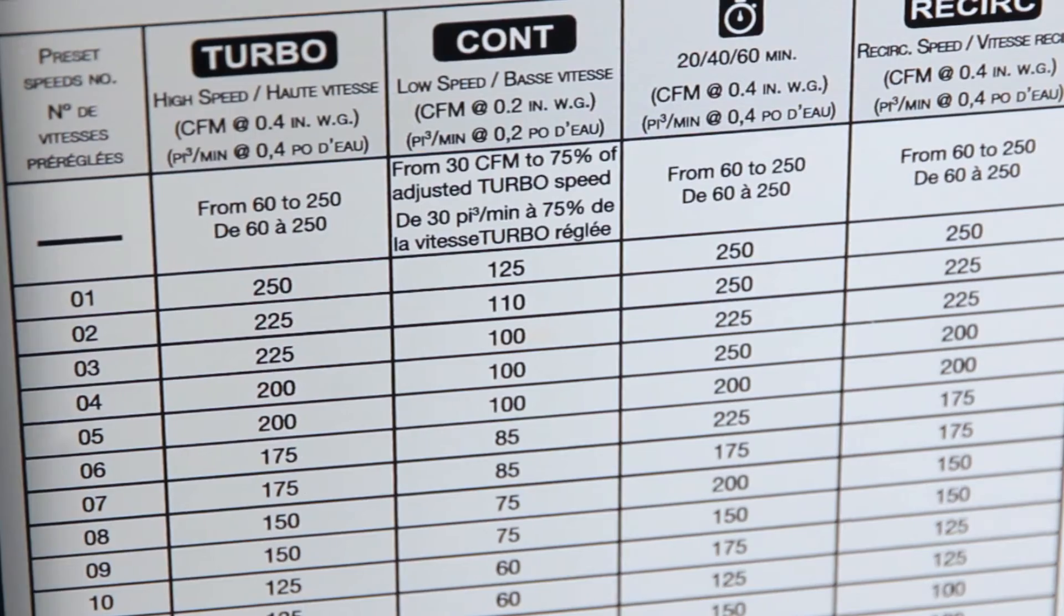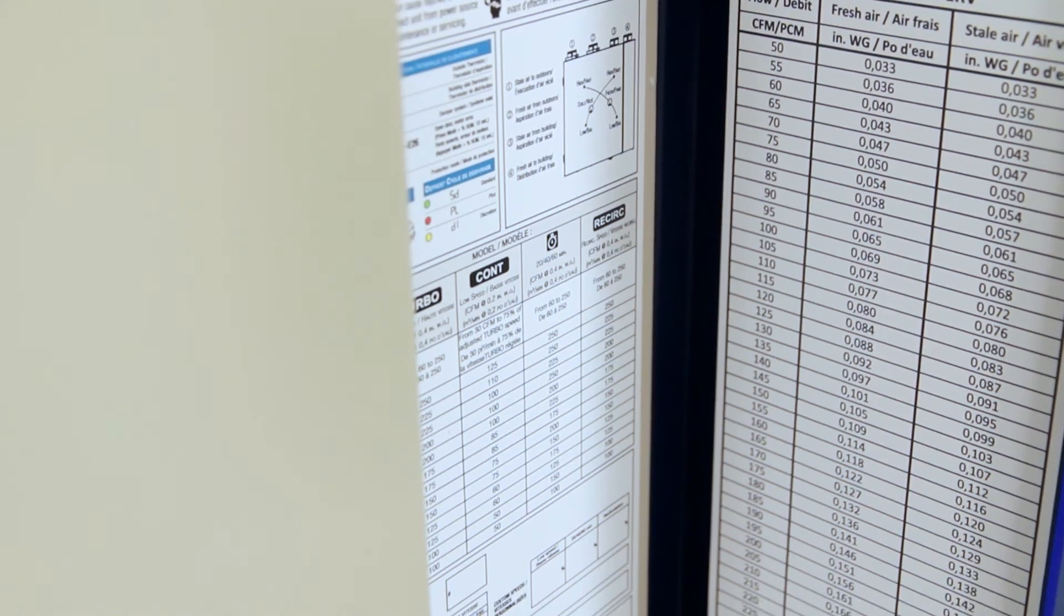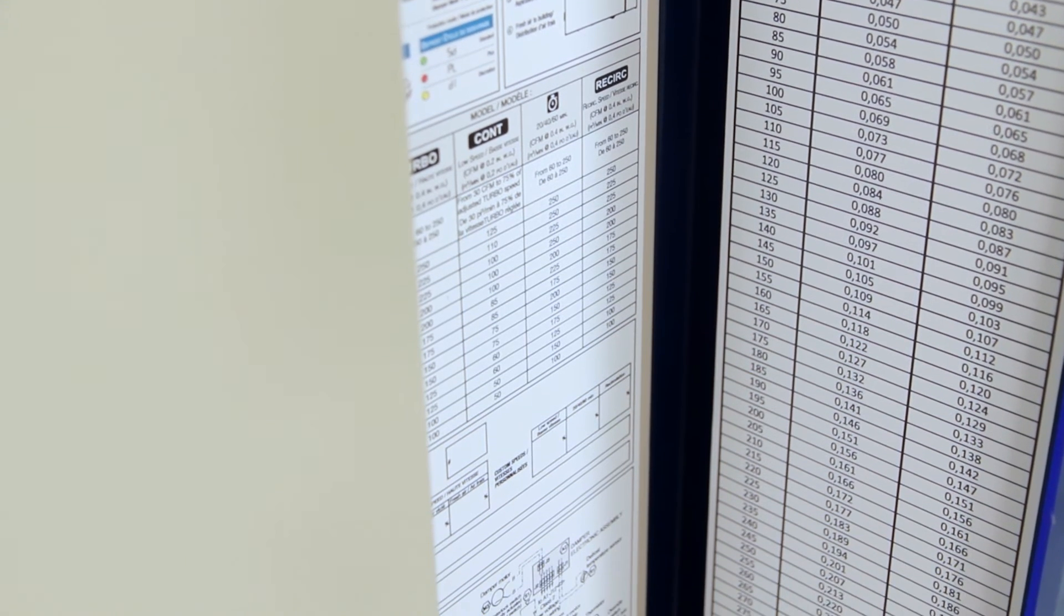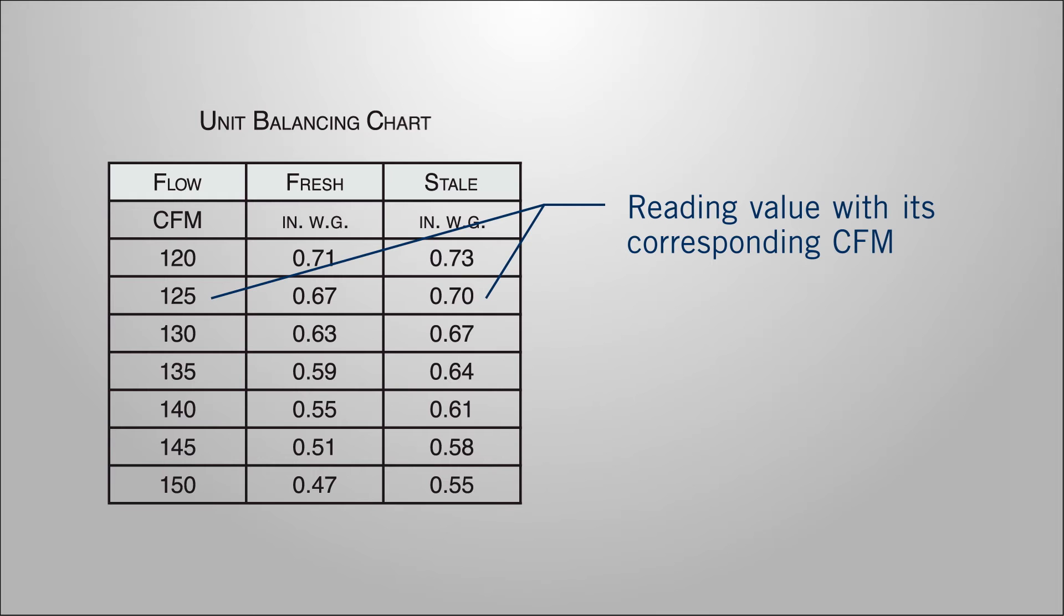The unit balancing chart and the unit preset speed table are affixed on the unit behind the right panel. Use the balancing chart to convert pressure values read from the pressure gauge to airflow CFM values. While balancing, the wall control screen displays which airflow to connect the pressure gauge.